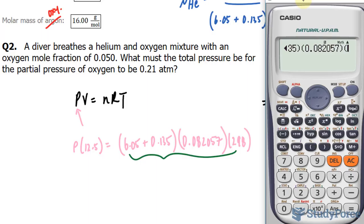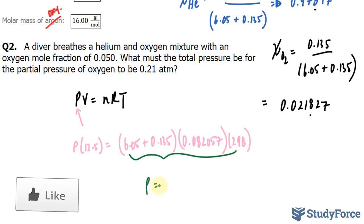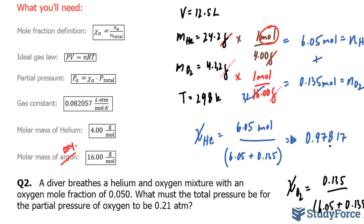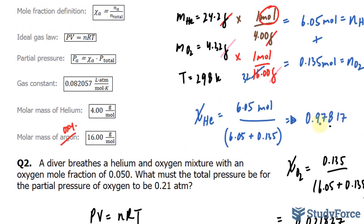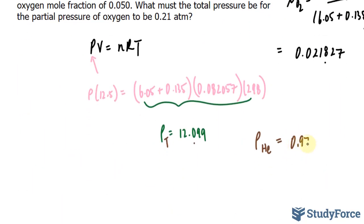So we have 6.05 plus 0.135 times R, our gas constant, which is 0.082057 multiplied to the temperature at 298 Kelvin. What I need to do is find the answer to this and divide it by 12.5. Let's go ahead and do that. We have 6.05 plus 0.135 times 0.082057 times 298, this divided by 12.5, and we get a total pressure of 12.099. P is equal to 12.099. This number should only be three significant figures long. So I'll put a dot underneath. I won't round just yet.